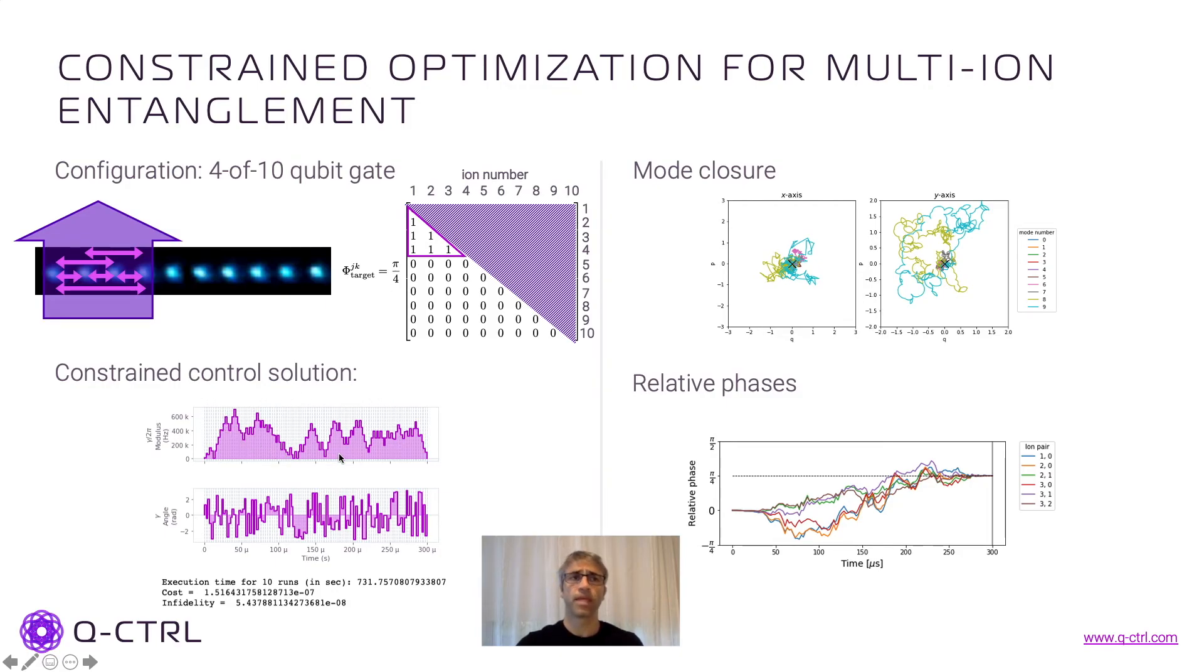And I'm also giving the example that this can be found using that constraint solution where we have a bound on the slew rate from one segment to the next in the control. And again, showing that the trajectories are closed and the relative phase exactly what we expect.